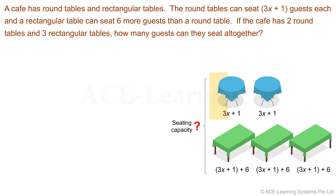We know how many guests one round table can seat, so finding the number of guests that 2 round tables can seat is not a problem. The number of guests that 1 rectangular table can seat is 6 more than that of round tables, so finding the number of guests that 3 rectangular tables can seat will not pose a problem either. The seating capacity of the cafe would be the total number of guests that the round tables can seat, plus the total number of guests that the rectangular tables can seat.